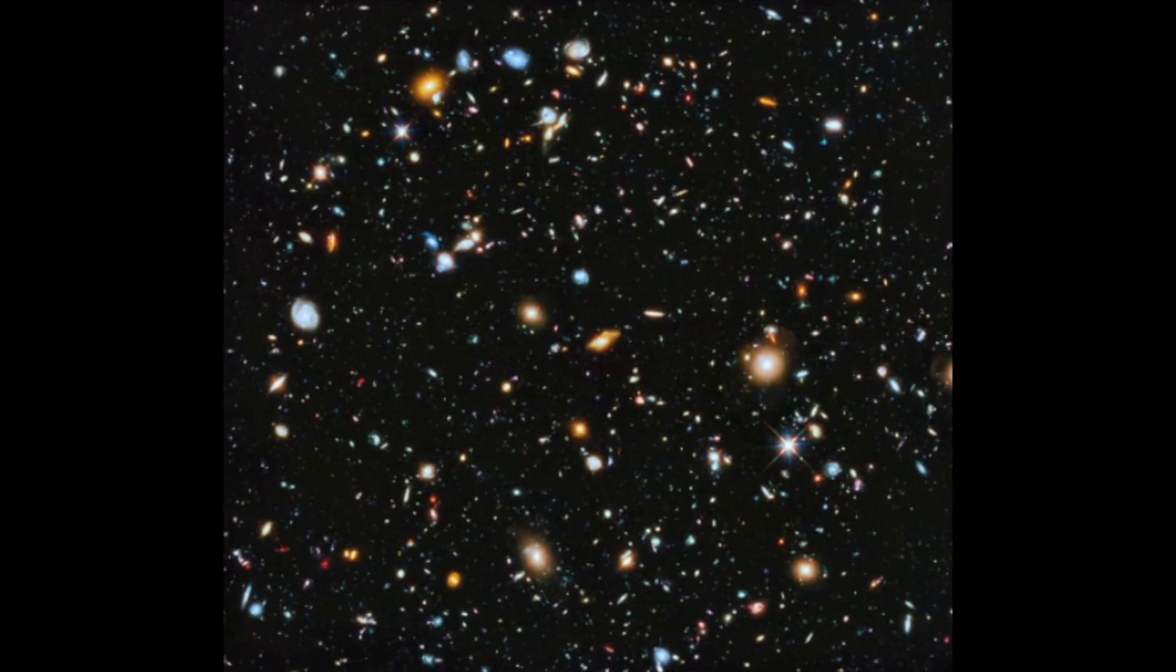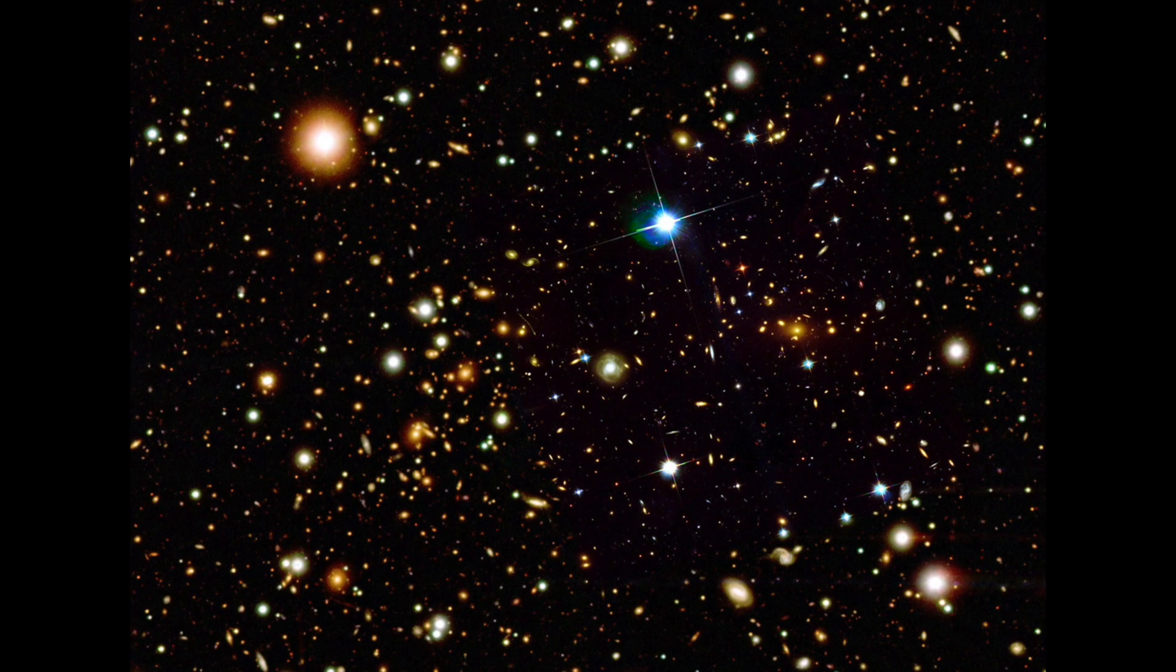This area is also called the observable universe, which is the absolute past to the observer. The cosmic horizon is the boundary of the observable universe. The objects on the horizon become infinitely redshifted, that is they constantly move further away.